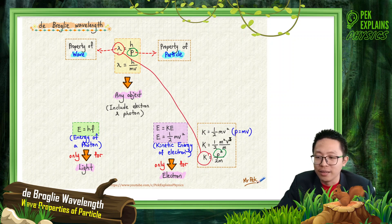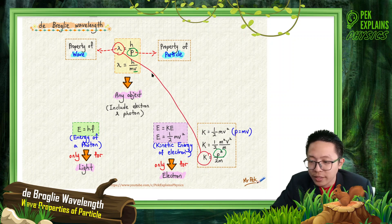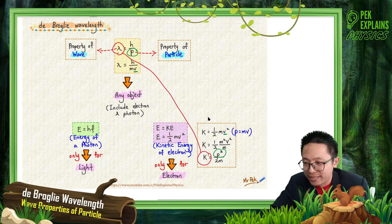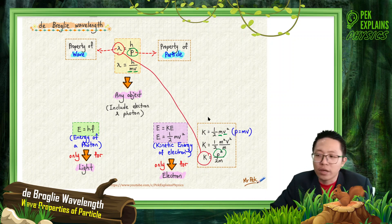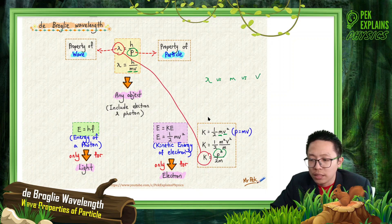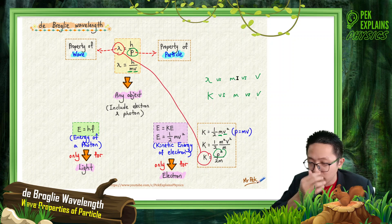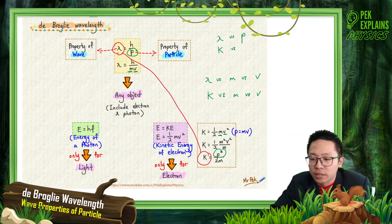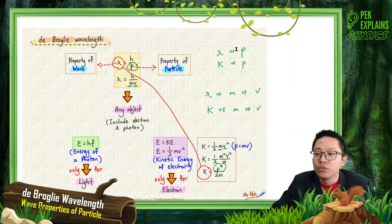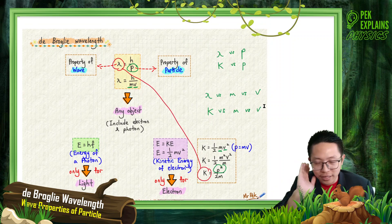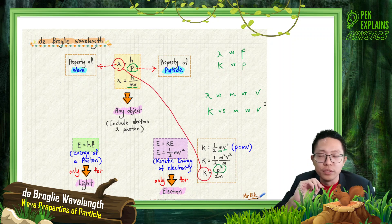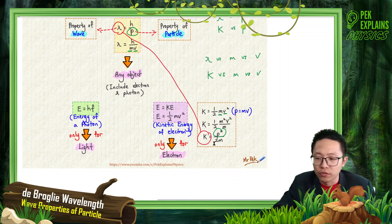Using momentum squared over 2m is easier because lambda relates to momentum only. If we use velocity instead, we'd have three variables: lambda, mass, and velocity for kinetic energy. Using momentum as a bridge, we only have two variables — kinetic energy versus momentum, and lambda versus momentum — which is simpler.